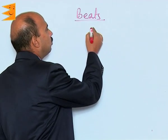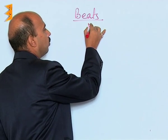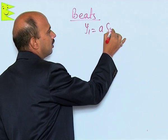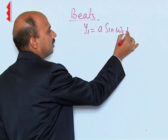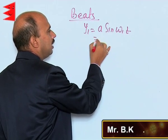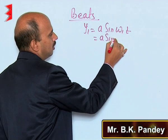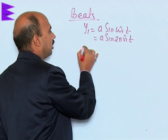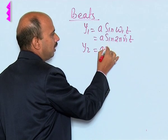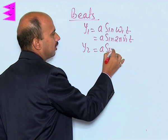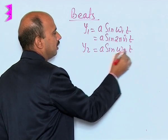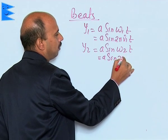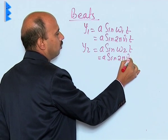Now, there are two waves. One is represented by y1 = a sin(ω1 t), which can be written as a sin(2π ν1 t). y2 is equal to a sin(ω2 t), that is a sin(2π ν2 t).